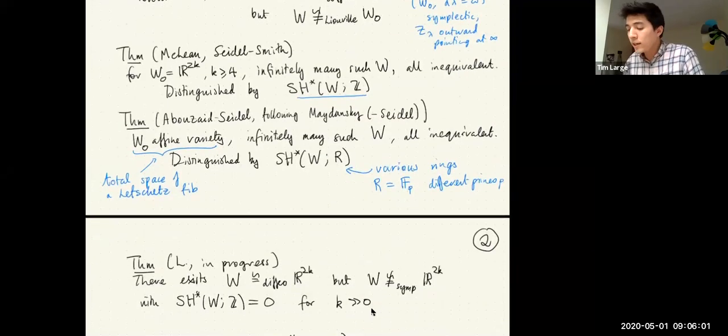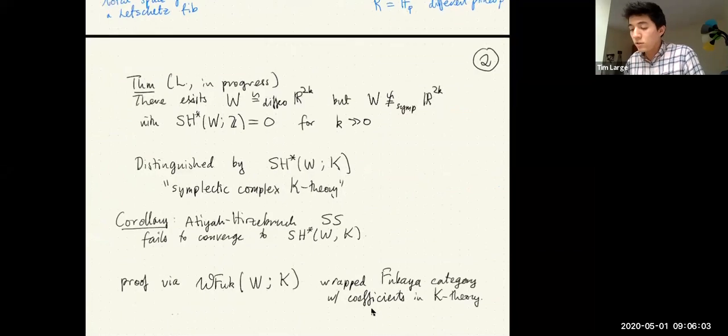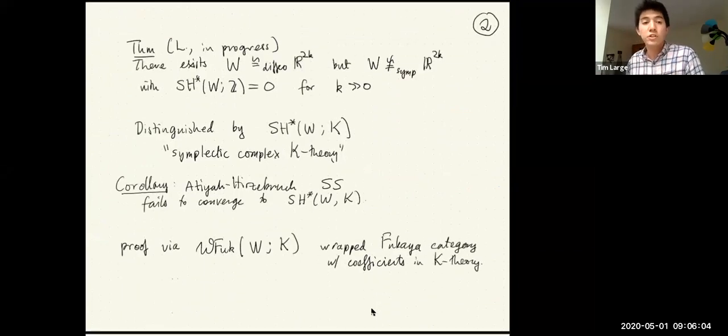By using different Lefschetz fibration surgery-style techniques, they can construct exotic symplectic structures which have interesting properties with their symplectic cohomology with respect to different coefficient fields. The result I'd like to talk about today is a version of this in the spirit of their result.